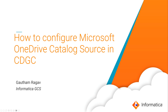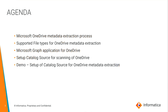Hello everyone, I'm Gautam Rakhal from Informatica GCS. Today we're going to go over the steps to configure a Microsoft OneDrive catalog source in CDGC. In today's session we will cover the Microsoft OneDrive metadata extraction process, understand the different file types supported, what a Microsoft Graph application is and why we need it, how to set up a catalog source for scanning OneDrive, and finally a demo of the catalog source configuration in Metadata Command Center.